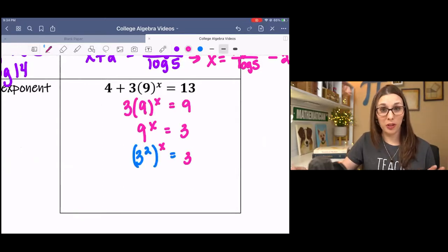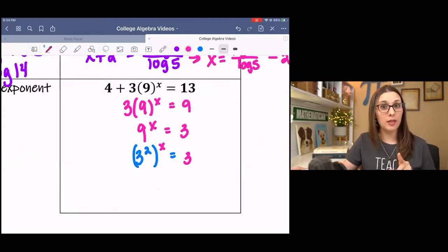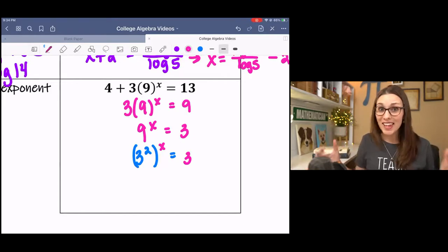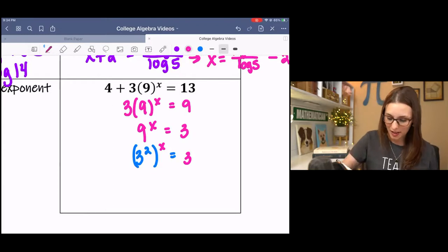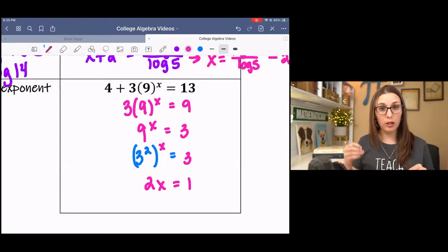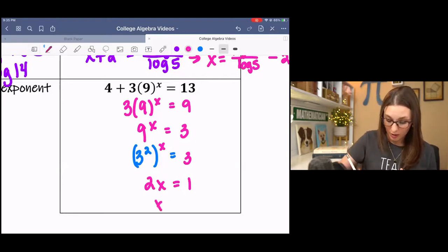This one actually ended up really cool. We don't have to log both sides. Now, if you did log both sides after you isolated the exponential term, then you're going to get the same answer. So don't erase your work. But you don't have to because what happens is when you subtract 4 and then divide by 3, we get 9 to the x equals 3. 9 can be rewritten with a base of 3, and then we have the same base. So now we can just look at the exponents. There's a 1 on the 3, 3 to the 1st, and solve that way.